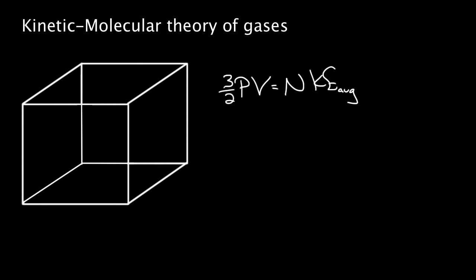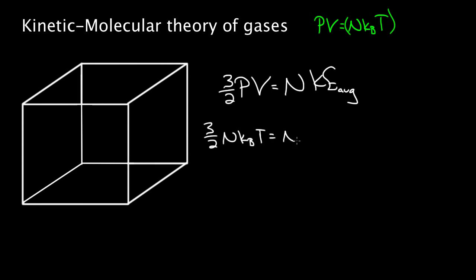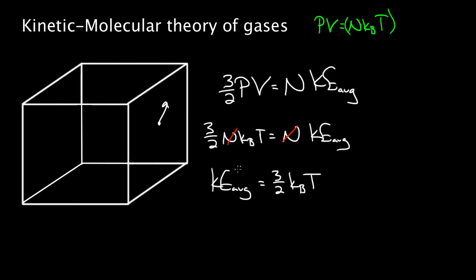Using the ideal gas law PV = NkT and substituting into (3/2)·PV = N·(avg KE), we get (3/2)·NkT = N·(avg KE). The N's cancel, giving us that the average kinetic energy of one gas molecule equals (3/2)·k_B·T. This is a powerful result: no matter what kind of ideal gas you have, if you know the temperature, you can directly determine the average kinetic energy of a single gas molecule.